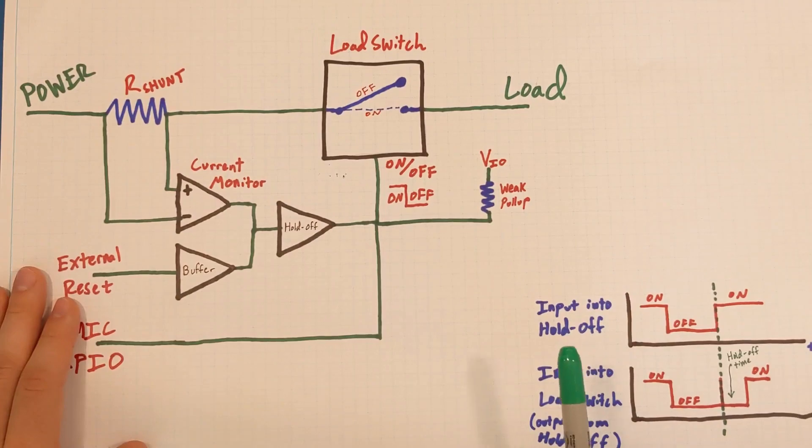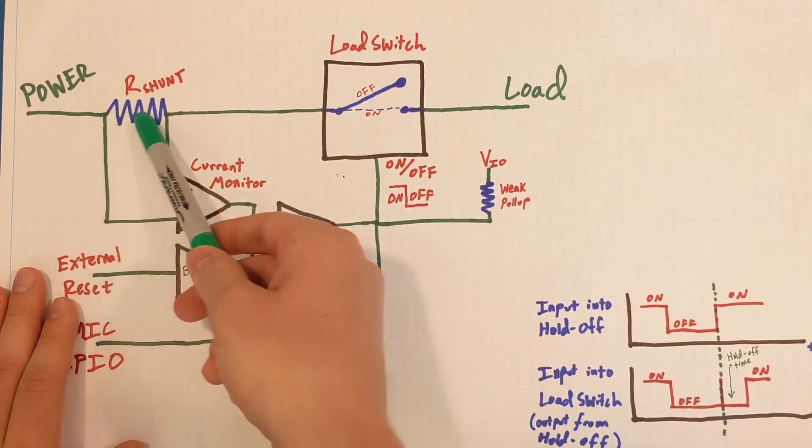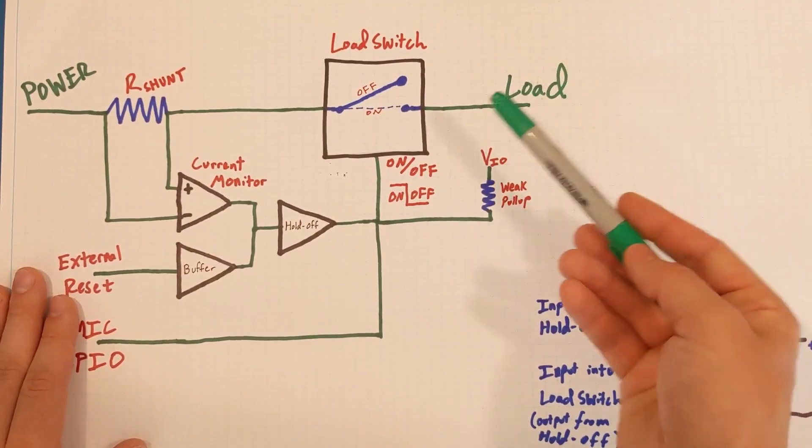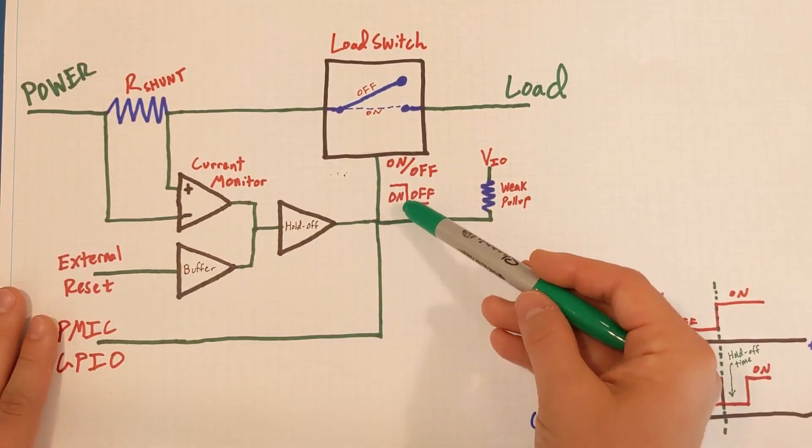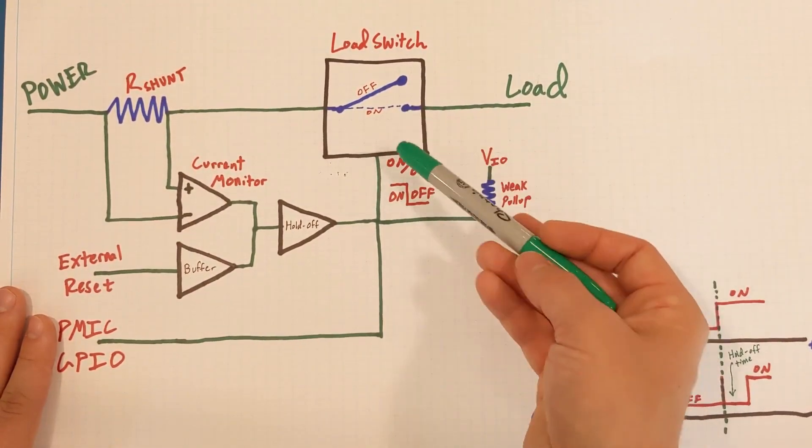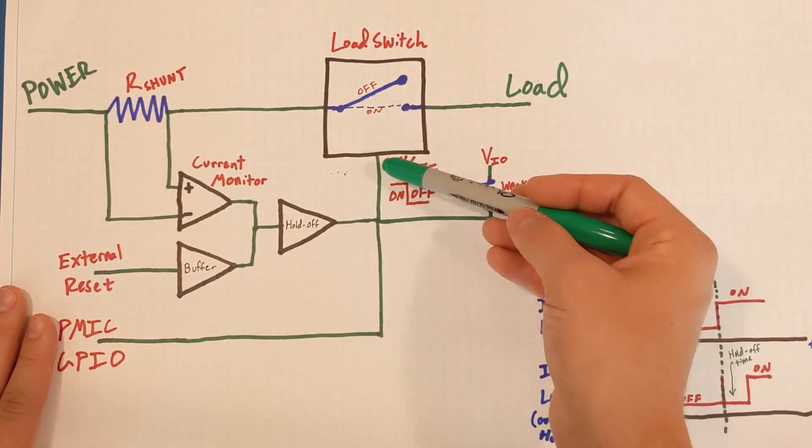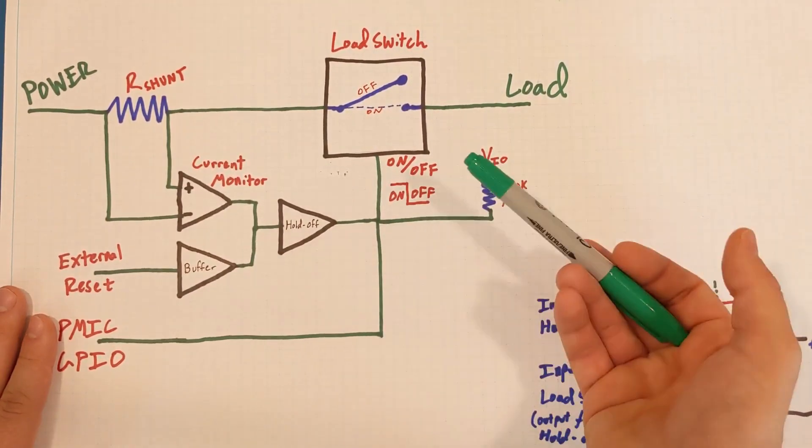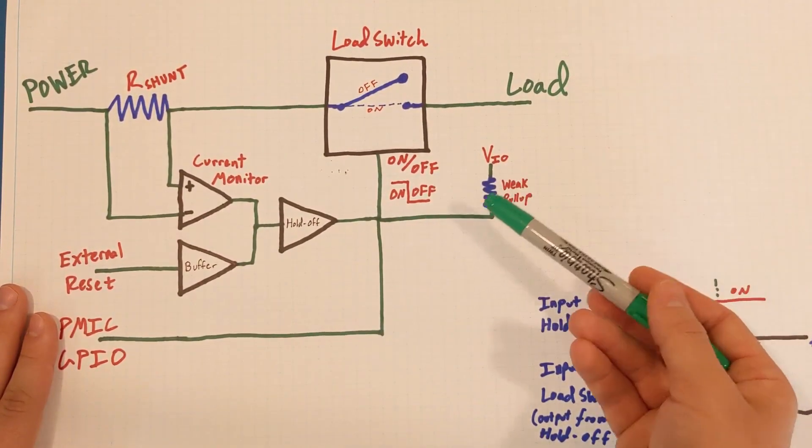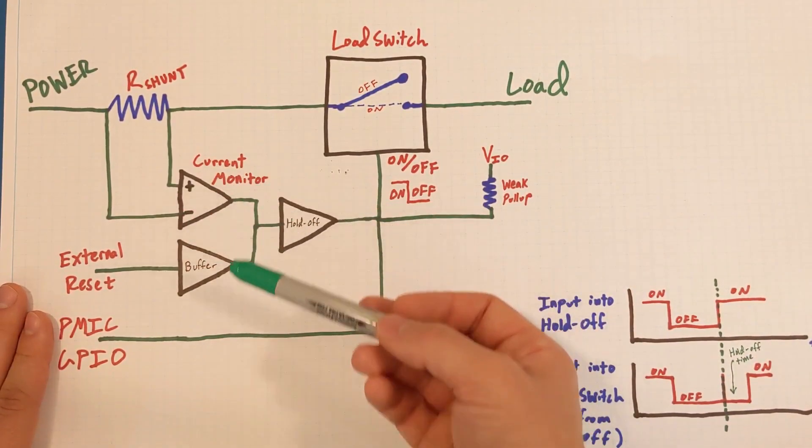To control those 16 power rails, I have essentially this circuit inside. So power enters over here, goes through a shunt resistor, a load switch which has an on or off control, and is output to whatever load is out there. Now, by default, driving this input signal high to a high voltage will turn on the load switch, allowing current to flow from the power source to the load, and driving this control voltage low will turn off the load switch. By default, I have it pulled up with a weak resistor pull-up, that way it can be overridden by either the power management IC, or this current monitor, or external reset circuit.